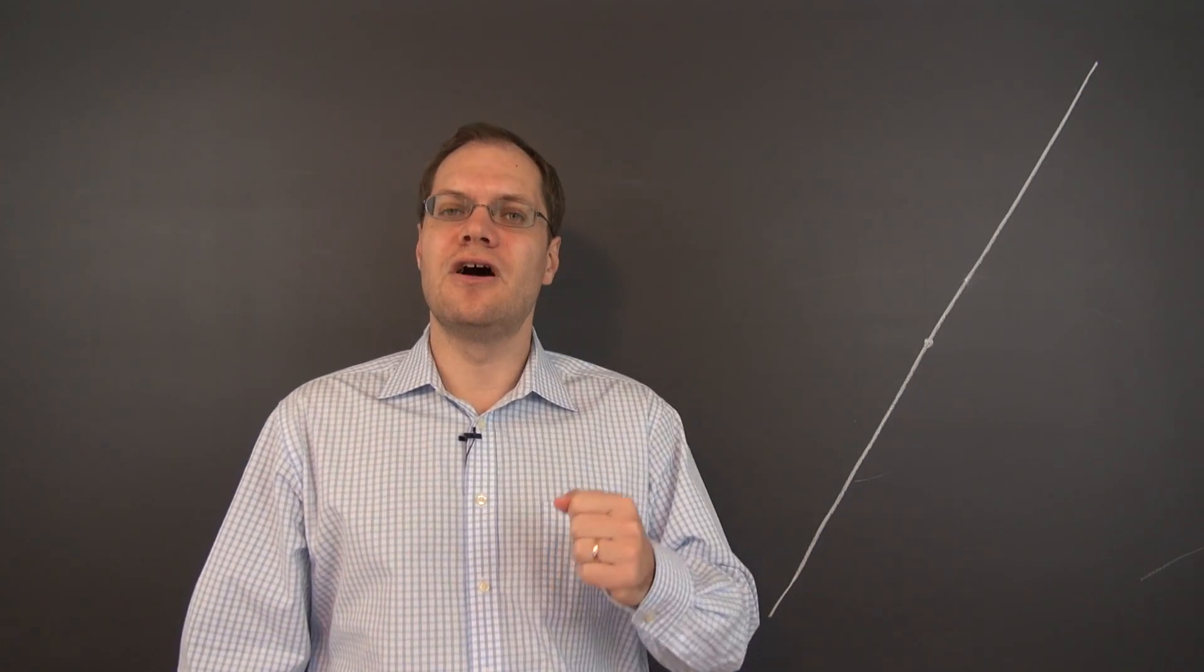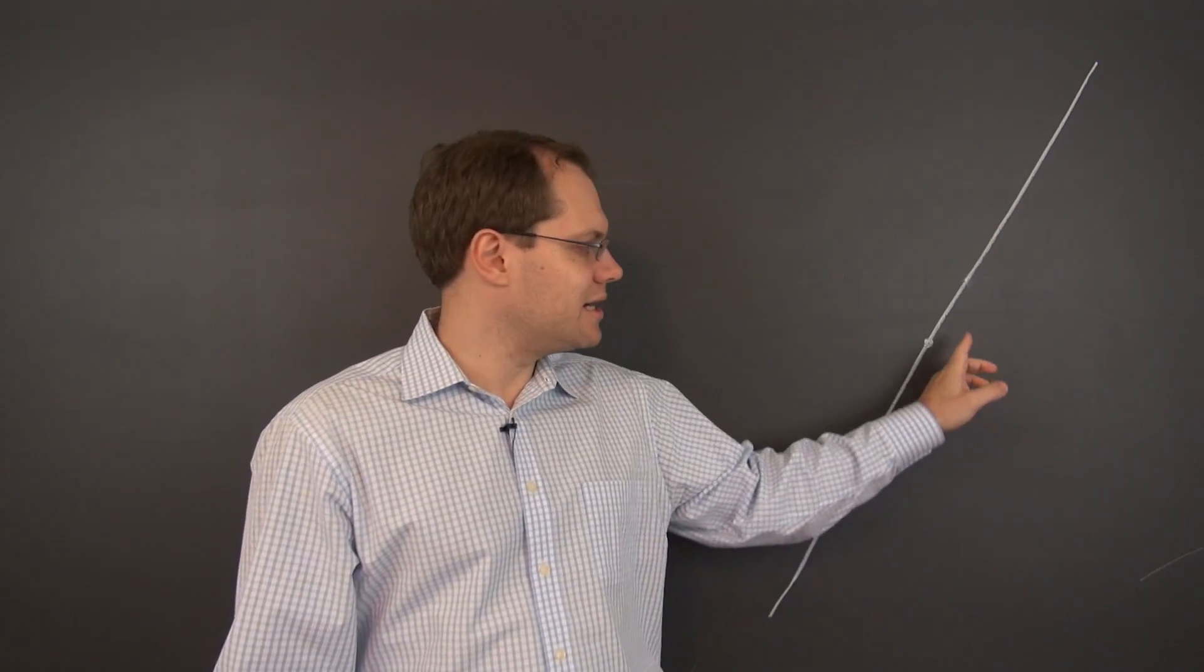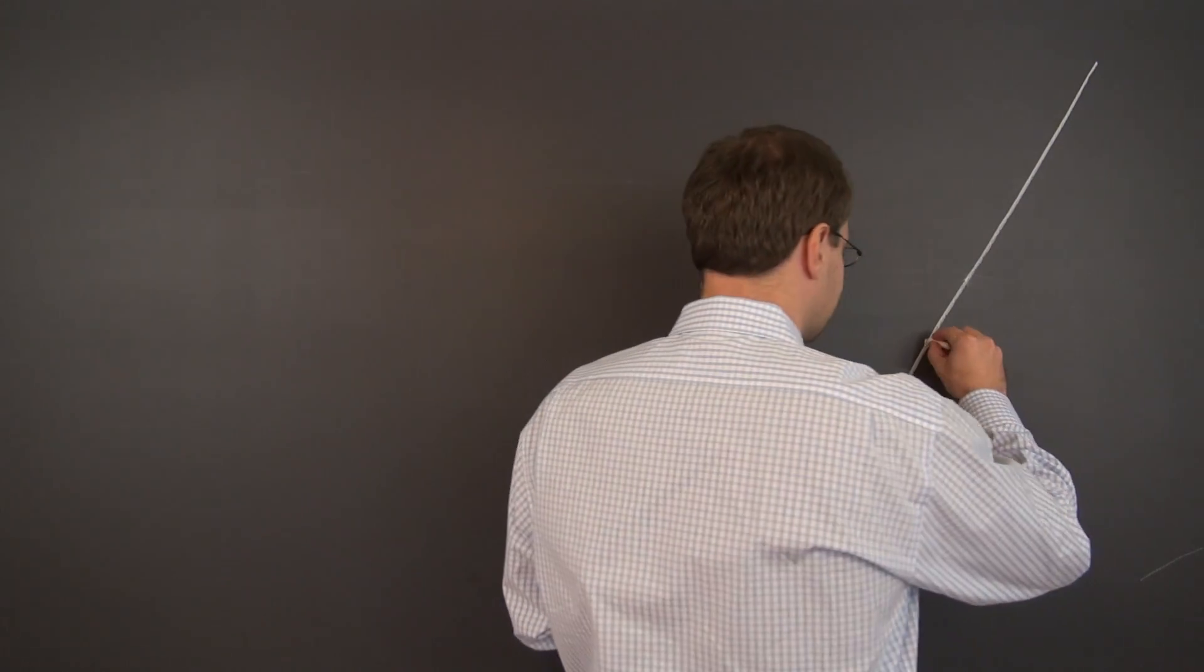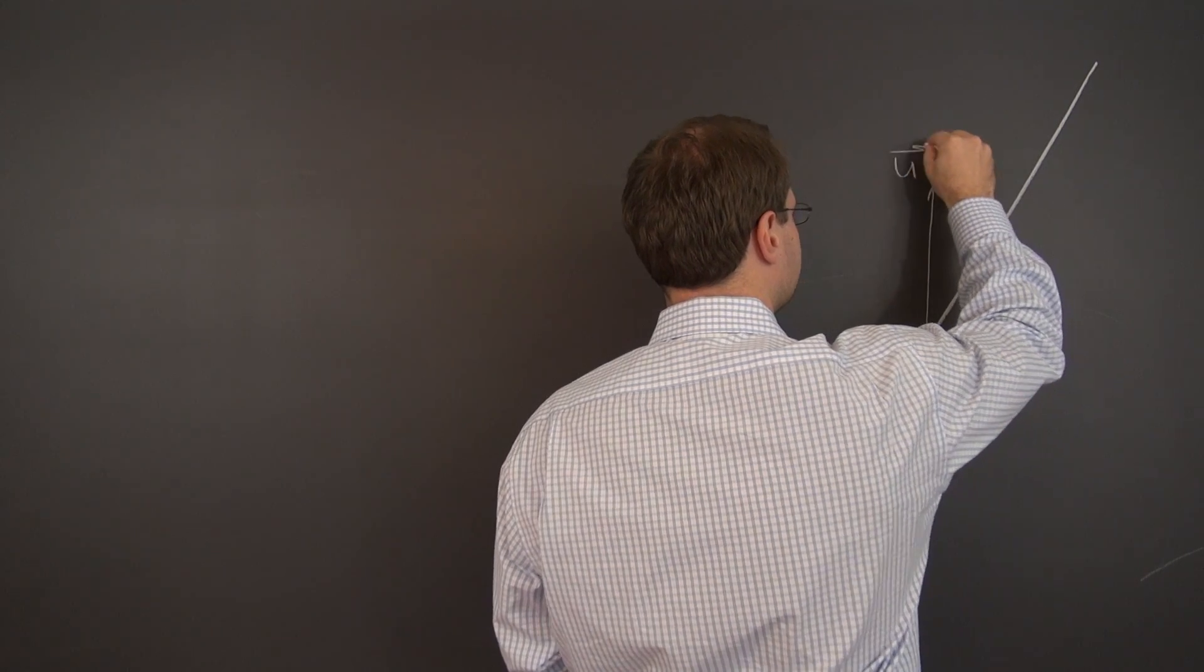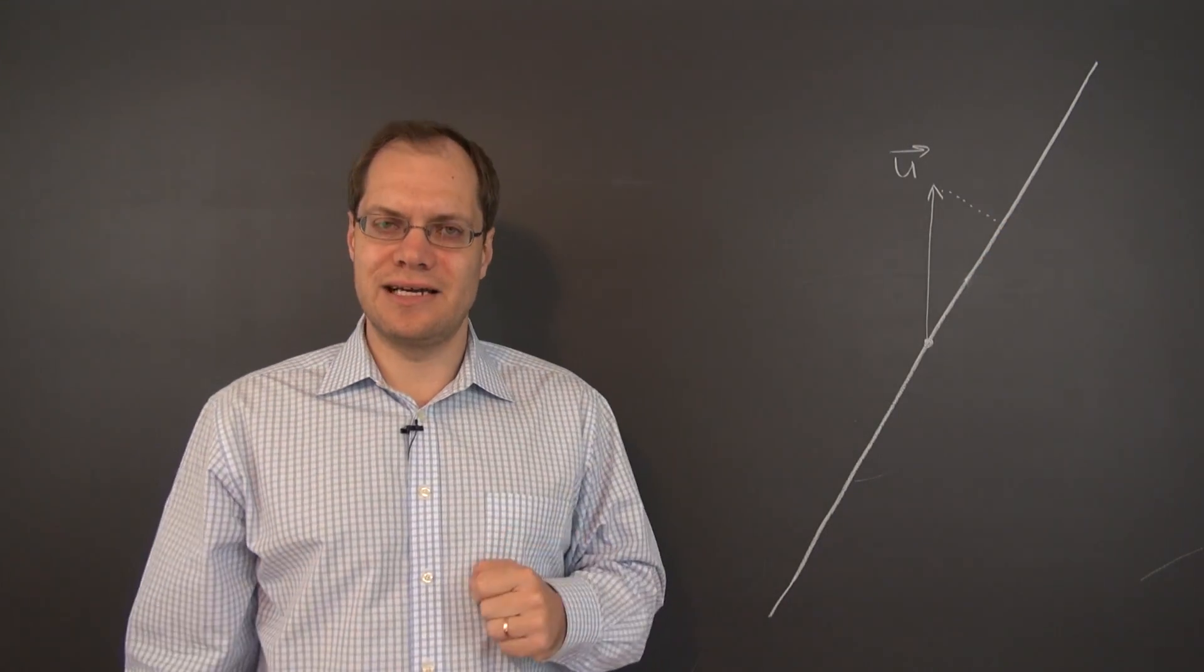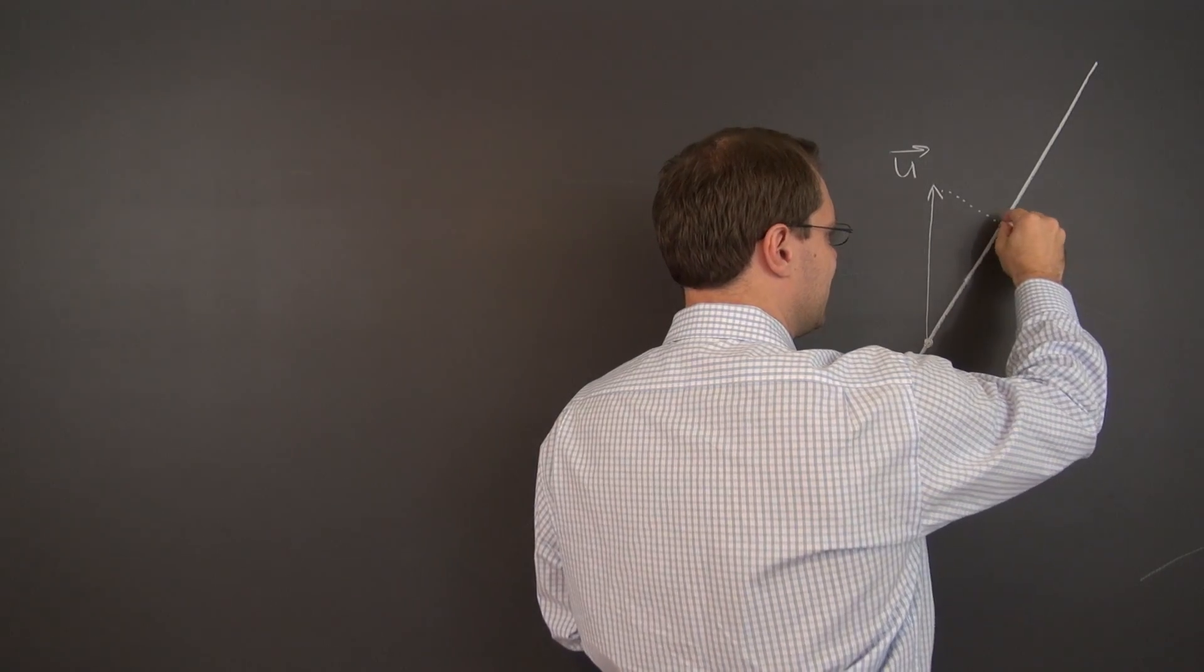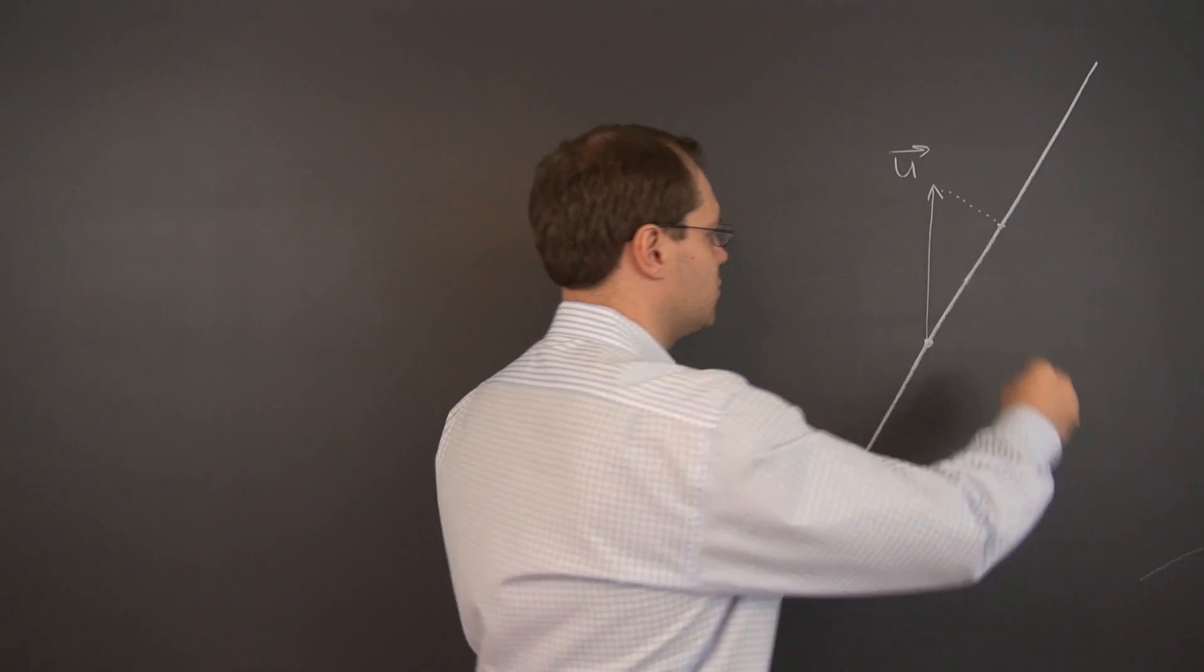Alright, here is the definition of the projection onto a straight line. Once again, I have a straight line that passes through the origin, and projection works like this. For any given vector, assuming this is the vector u, the projection once again calls for drawing a line that's perpendicular to the straight line given, but this time you don't go beyond the line, you just land on the line, and wherever you land, that's the image.